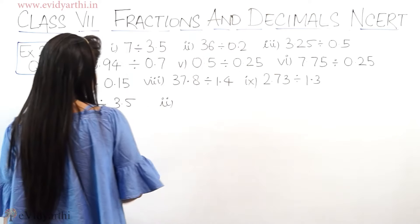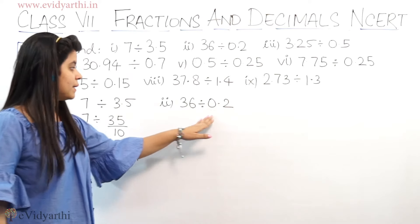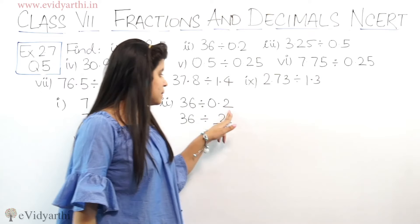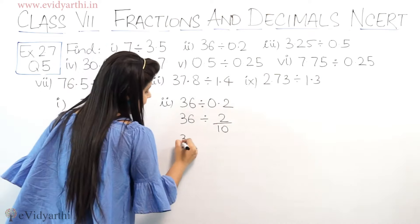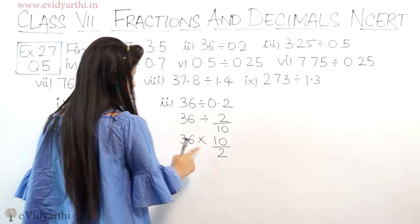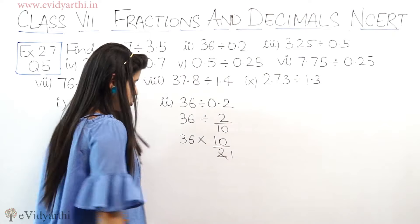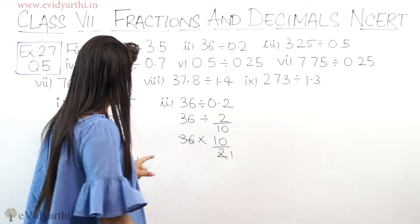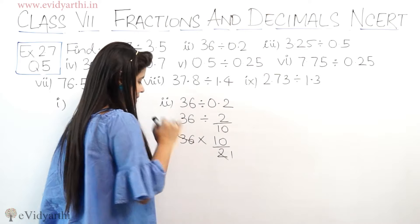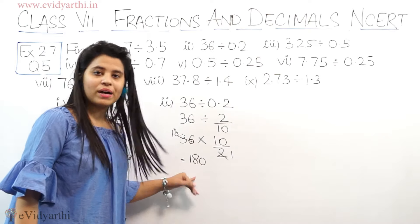Coming to the second part: 36 divided by 0.2. अब 36 फिर से whole number है और एक decimal number है. 0.2 can be written as 2 upon 10, because decimal के बाद एक digit है. So यह हो जाएगा 36 multiplied by the reciprocal, that is 10 upon 2. अब 36 और 2 को cut कर सकते हो — 2 times 18 is 36. 18 into 10 is 180. So the answer is 180.